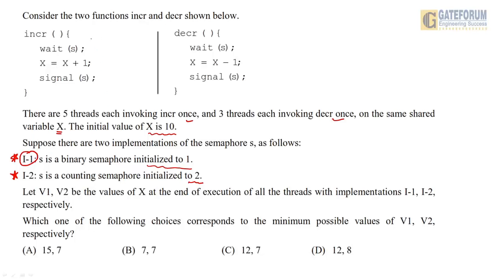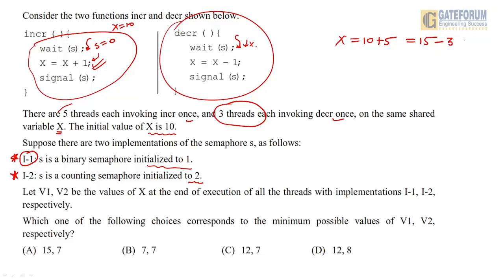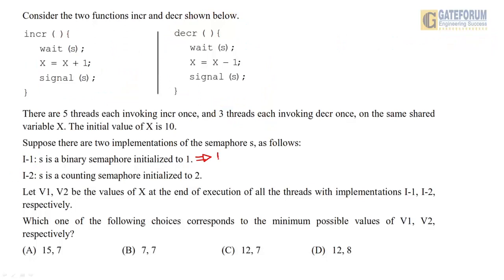For implementation I1 with binary semaphore: only one process can enter its critical section at a time since wait reduces s to zero. Initially x is 10. Five threads invoke increment, so x increases by 5 to become 15. Then three threads invoke decrement, decreasing x by 3, giving 12. After all 8 operations, the value V1 using the first implementation is 12.